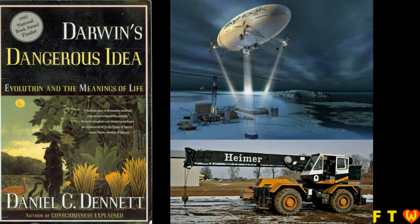Dennett expresses the same idea in terms of skyhooks versus cranes. Literally, a crane is a machine used for lifting things — it sits on the ground and has a long neck, like the bird by the same name. A skyhook is literally a floating object used for lifting things. Dennett uses these as metaphors: by skyhook he means a supernatural explanation for something, and by crane he means a natural explanation. Dennett believes that large, complex cranes are composed of, and have sometimes evolved from, smaller, simpler cranes. Wherever you look, he believes you will find cranes, not skyhooks — and he believes it is cranes all the way down.